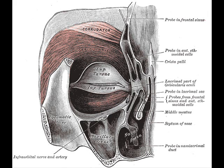The palpebral portion of the muscle is thin and pale. It arises from the bifurcation of the medial palpebral ligament, forms a series of concentric curves, and is inserted into the lateral palpebral raphe.